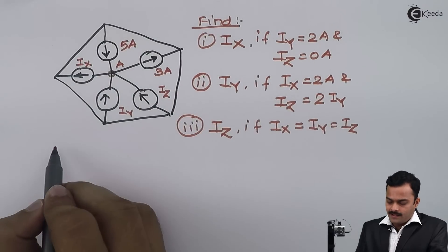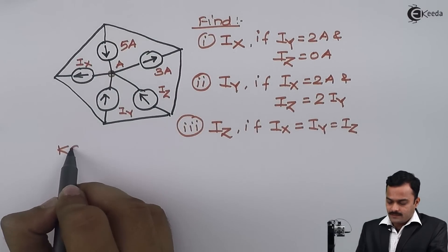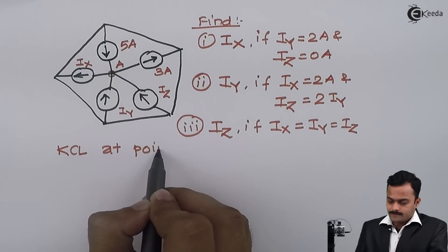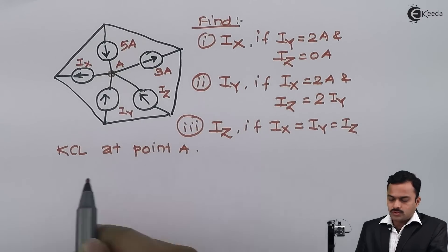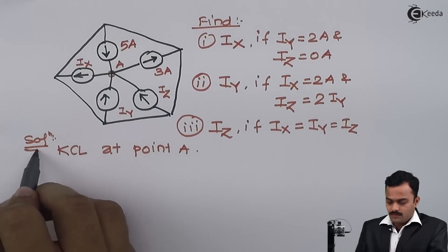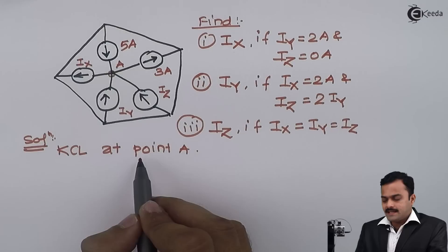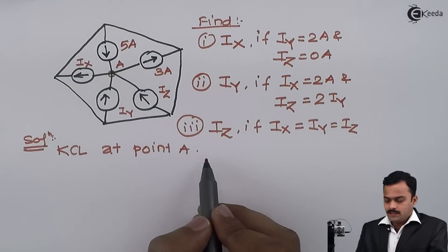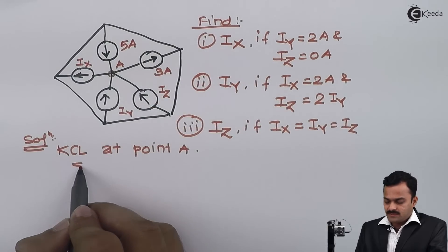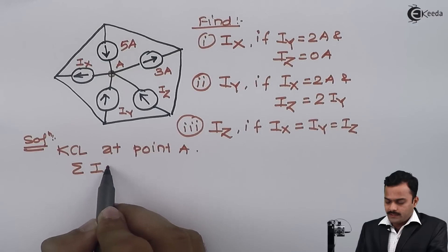And I am applying KCL at point A. So the first step of the solution is KCL at point A. I am applying, what I will get? So the KCL is summation of all incoming currents.